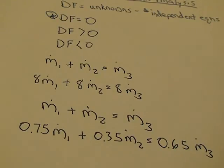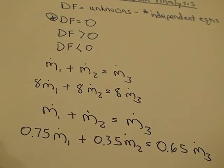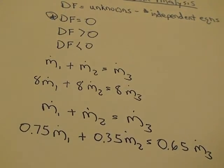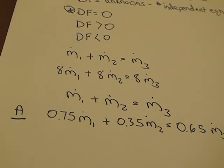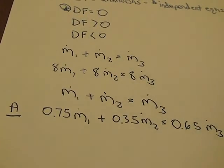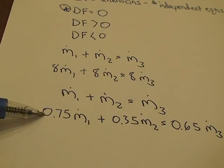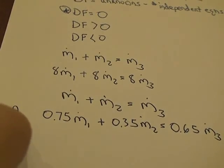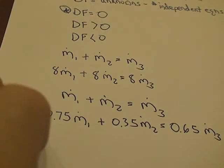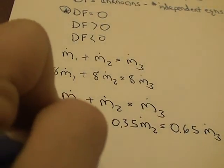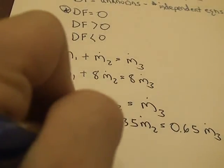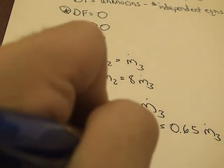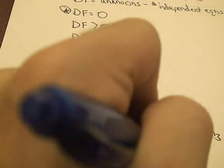Now, one thing to note is if you were to go back and do the second species equation, say this was for A right here, and let's denote this first equation as for species A. Well, let's do species B here. Obviously, it's going to be 25% of mass flow rate 1, and this is going to be 65% of mass flow rate 2, and that's going to equal 35% of mass flow rate 3.